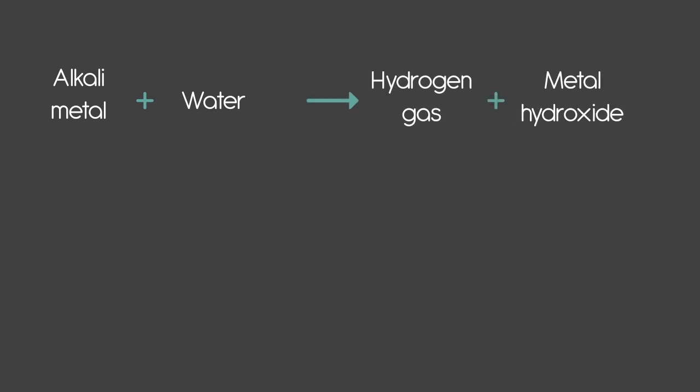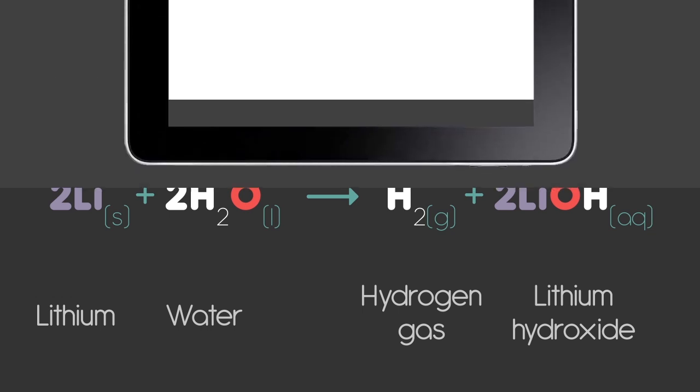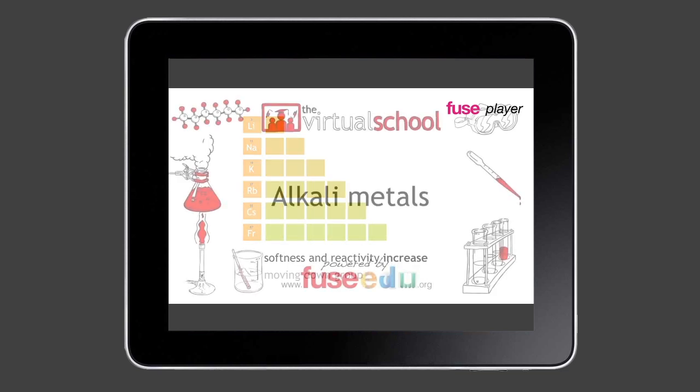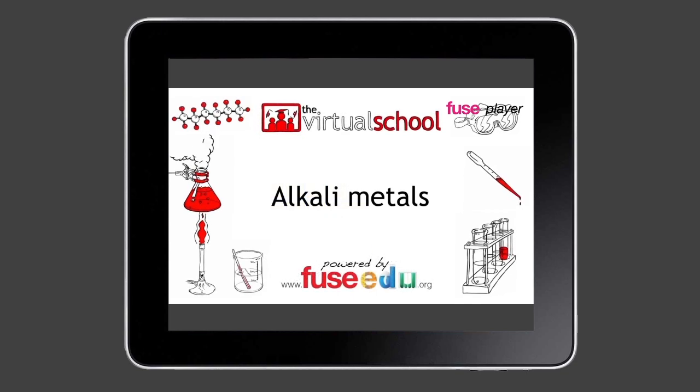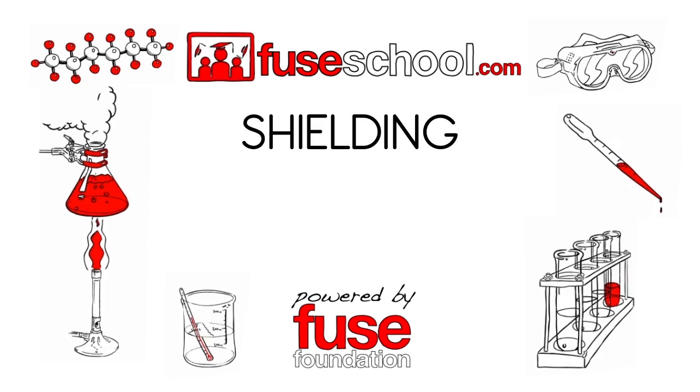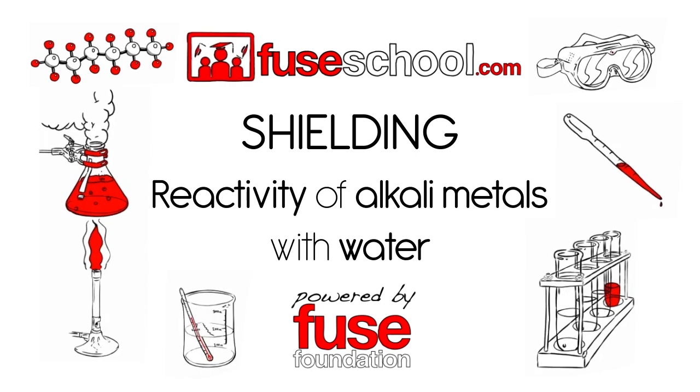You may have learned that an alkali metal reacts with water to form hydrogen gas and the corresponding metal hydroxide. You may have also learned that the reactivity of these metals with water increases moving down the group. That lesson is actually available right here on this channel. In this lesson, we will learn about the concept of shielding and how it contributes to certain observed trends, such as the reactivity of alkali metals with water.